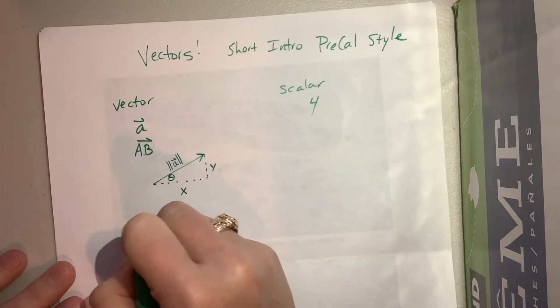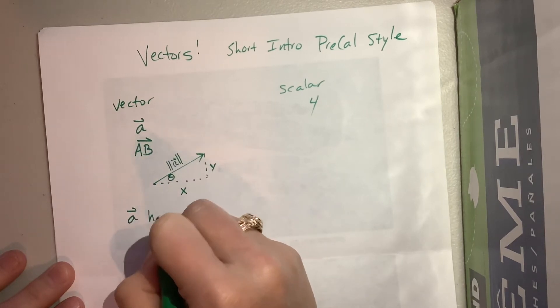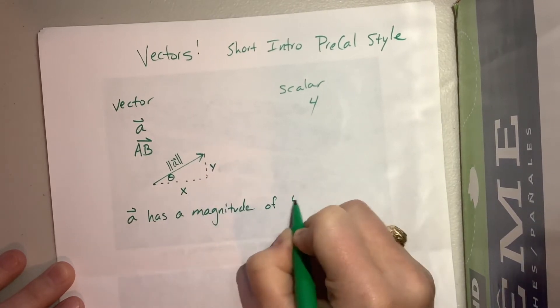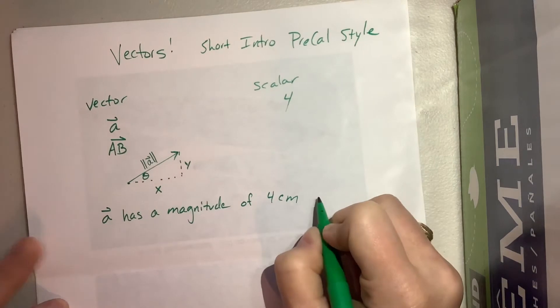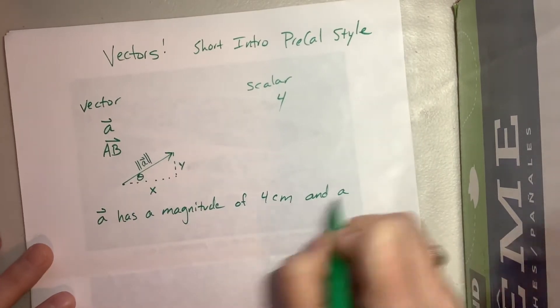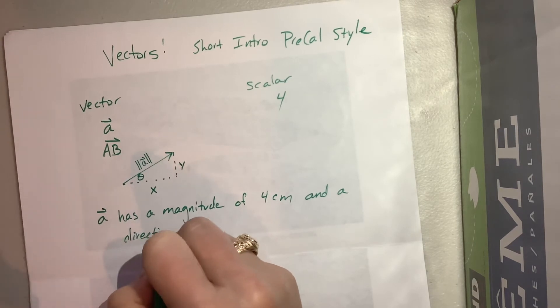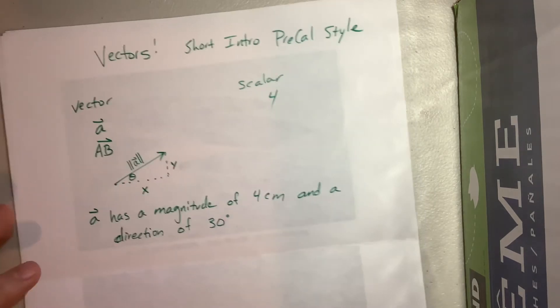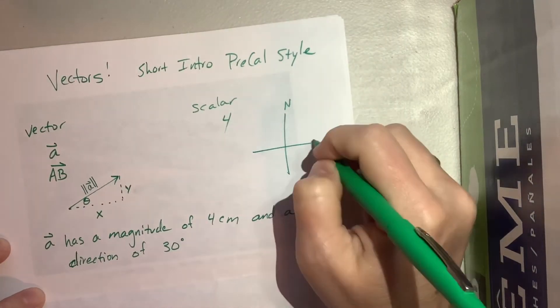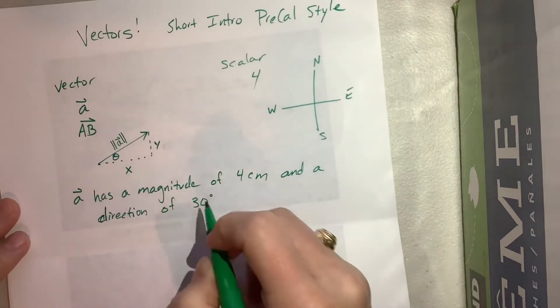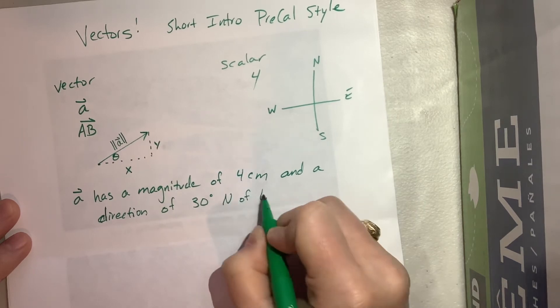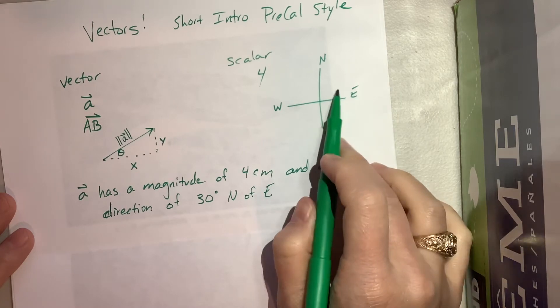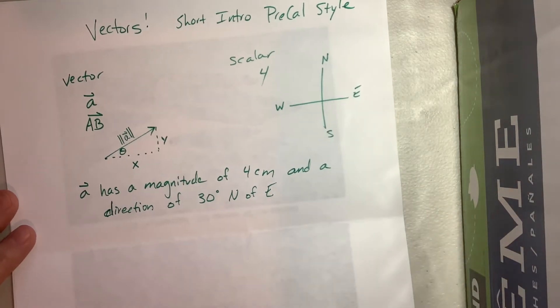So you'll notice the things that we learned about trig would still be true. So if I say that this vector A has a magnitude I don't know of four centimeters I'm making something up and direction of 30 degrees, sometimes we describe it in terms of the compass you know so like north, east, south, west.